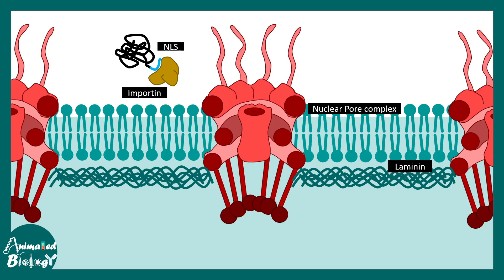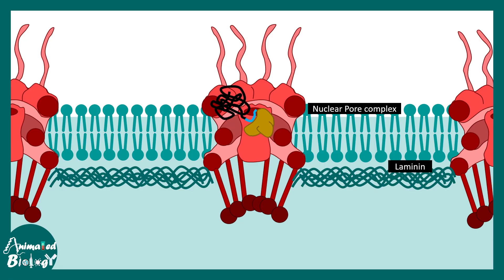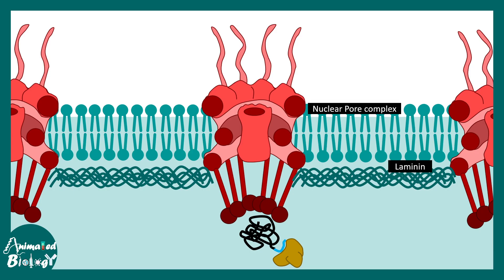There are specific signal sequences known as nuclear localization sequences, depicted in blue, and there are proteins known as importins, which are basically the import receptors. The first step is importin binding to the nuclear localization signal on the protein that needs to be transported inside. The importin then interacts with the nuclear pore and the protein eventually gets into the nucleus — importin plays a key role in the import process.